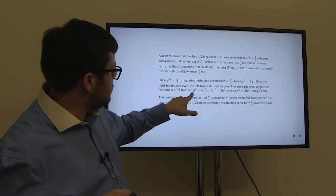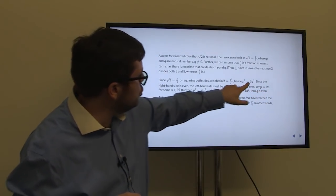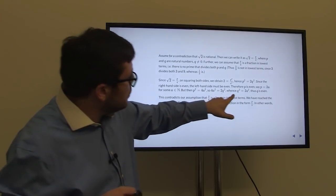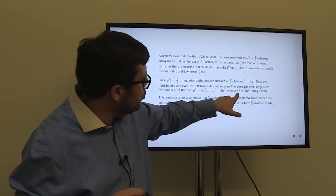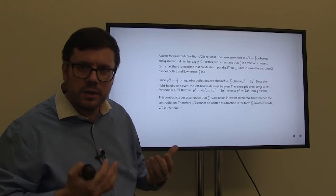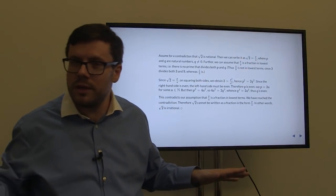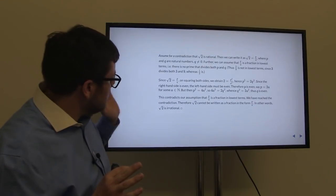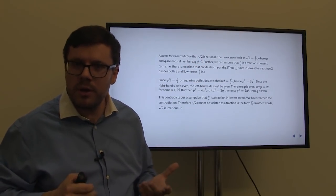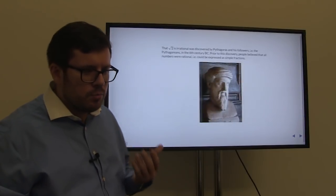We substitute p = 2a into the equation: p² = 4a² = 2q². Dividing both sides by 2 gives q² = 2a². Therefore q² is even, and therefore q must be even. But now we have a contradiction: we said this is a fraction in its lowest terms, but both p and q are even. We have just proved that √2 cannot be written as p/q — it is not a rational number, but an irrational number.